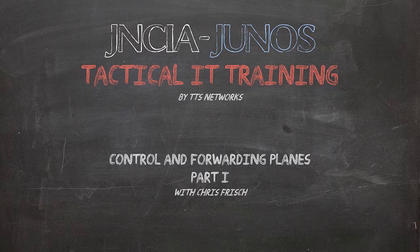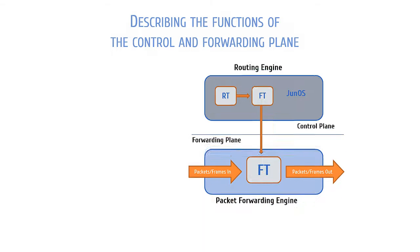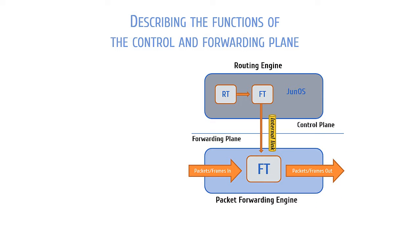When a Junos device receives a packet or frame, the first thing it needs to do is figure out where that information is going. The control plane is where the device determines what to do with the data coming in, then it tells the forwarding plane what to do with the data and the forwarding plane carries out the orders. You can think of it like the control plane is the brains of the operation and the forwarding plane is the muscle.